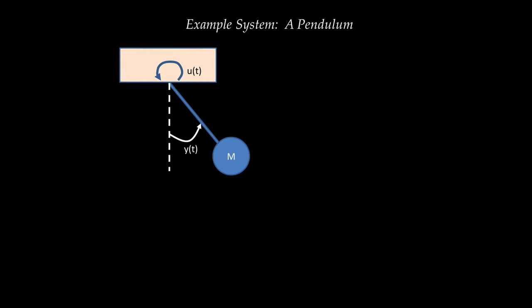From the previous tutorial, there are five steps to developing a state-space representation of a dynamic system. The first step is to identify the input — we've already identified it: the torque acting on the pendulum, U of T. The second step is to identify the output — the angle between the pendulum and the vertical, Y of T.